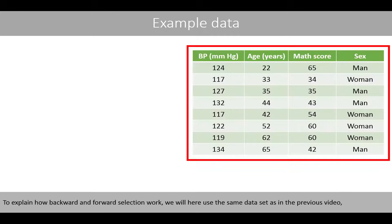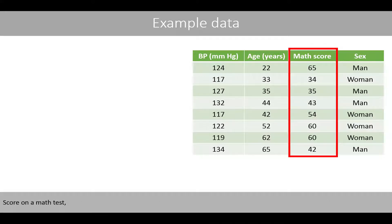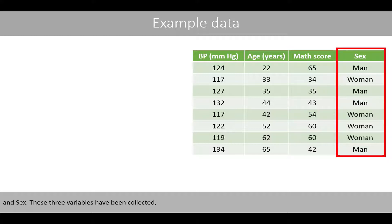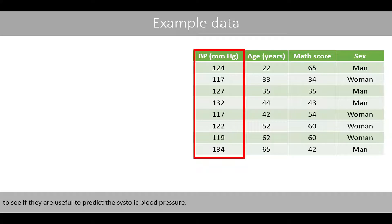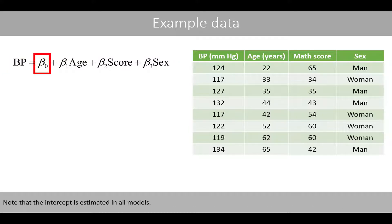To explain how backward and forward selection work, we will use the same dataset as in the previous video, where we have the variable age, score on a math test, and sex. These three variables have been collected to see if they are useful to predict the systolic blood pressure. We can fit the following model to the data. This model includes all explanatory variables and is therefore called the full model. Note that the intercept is estimated in all models.